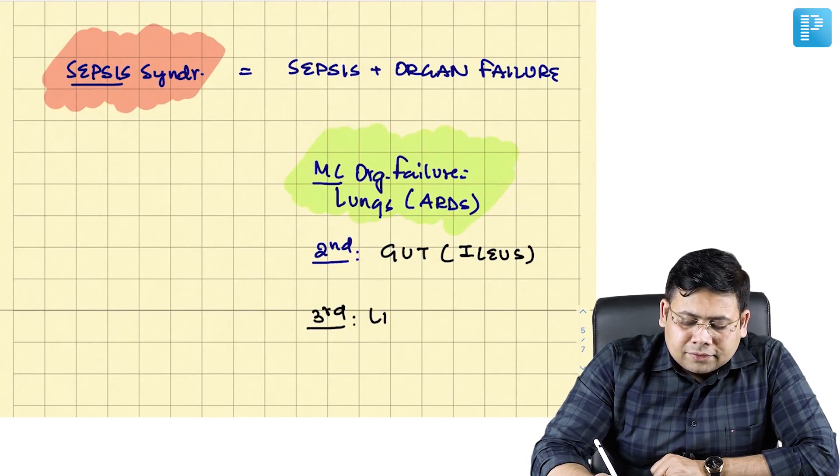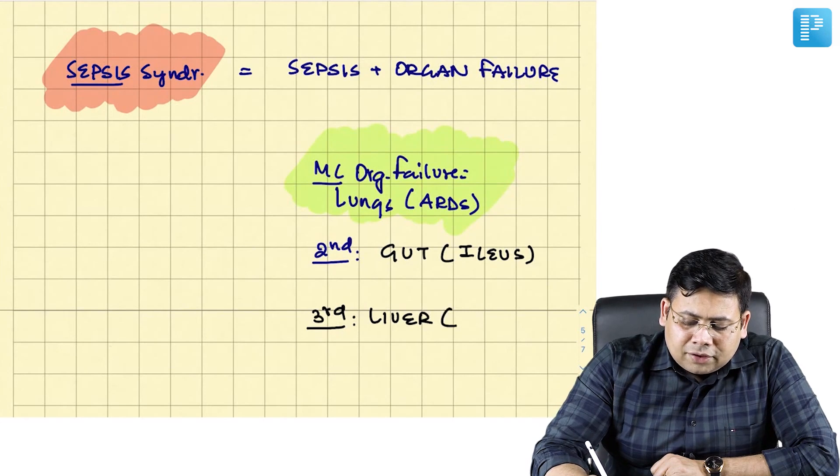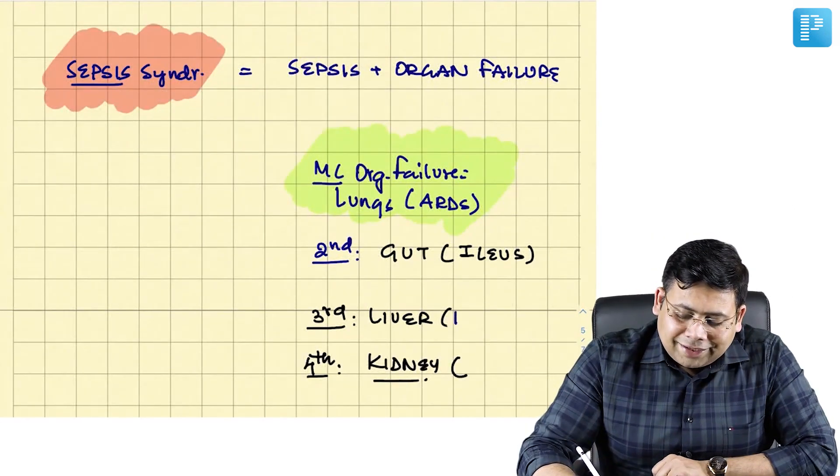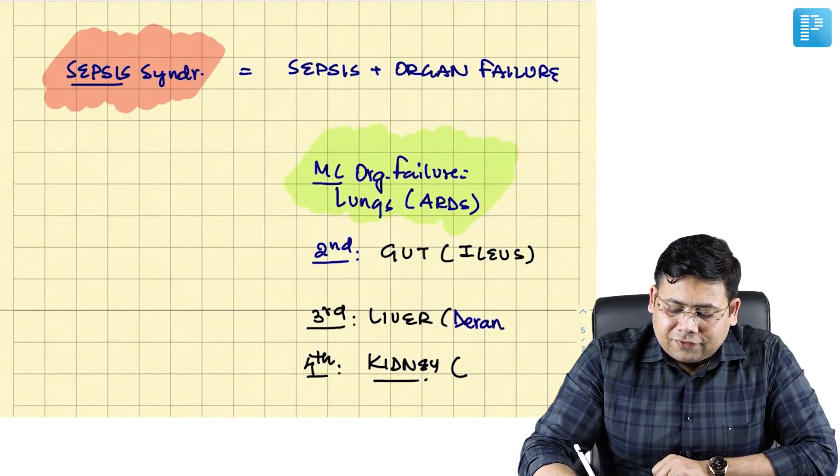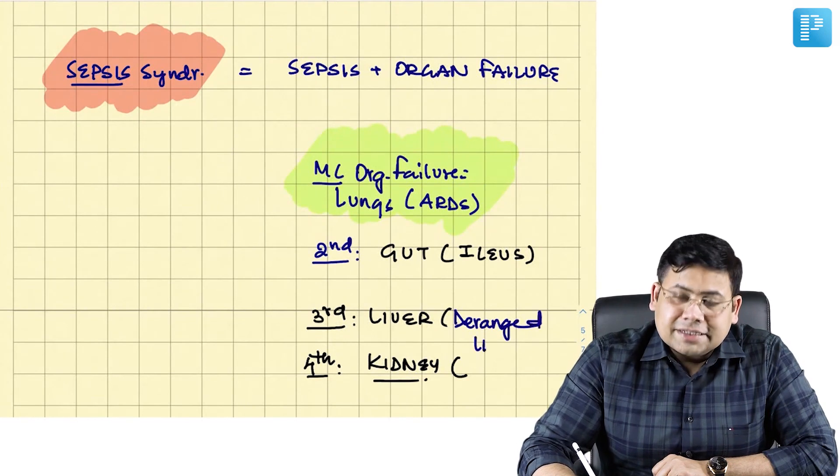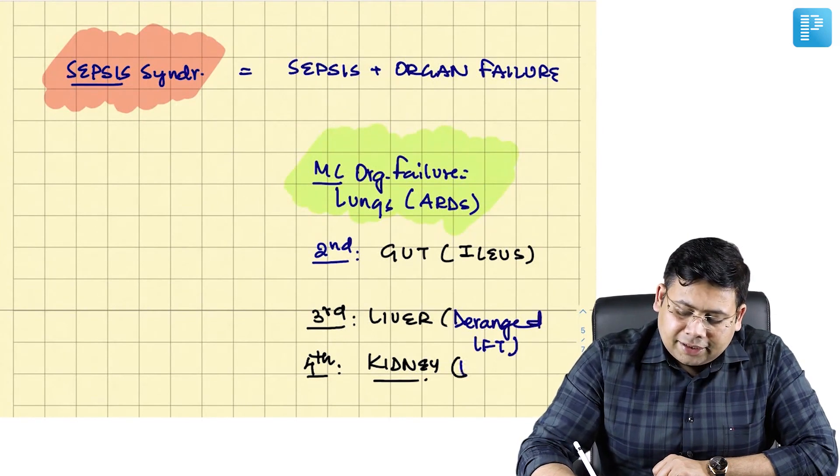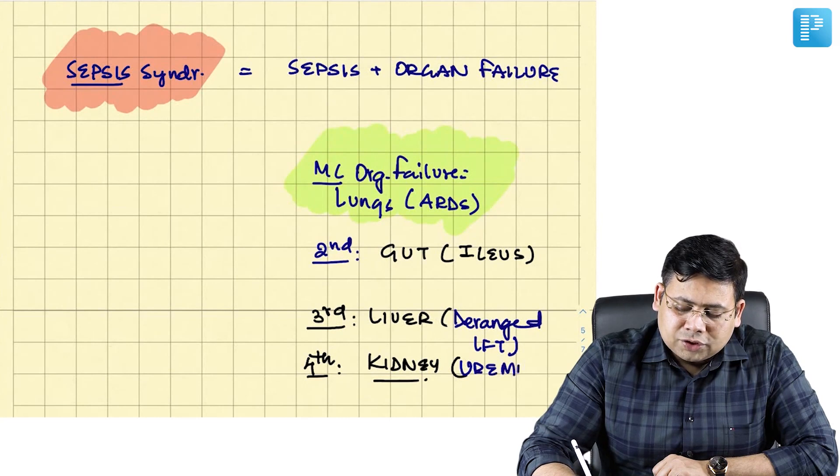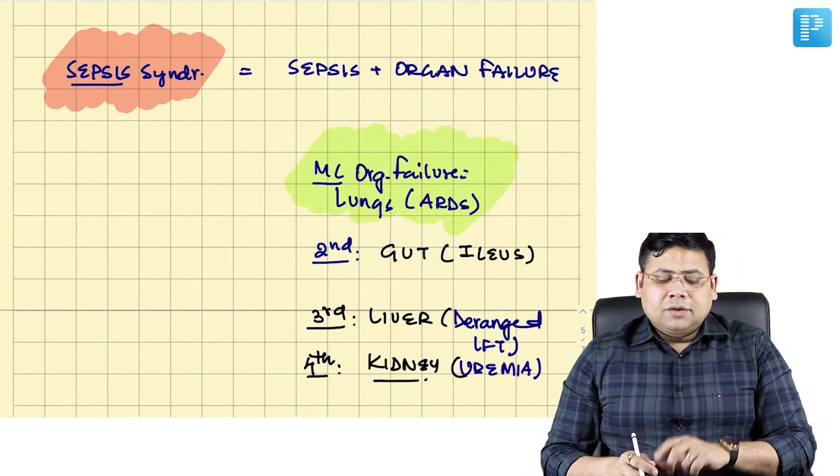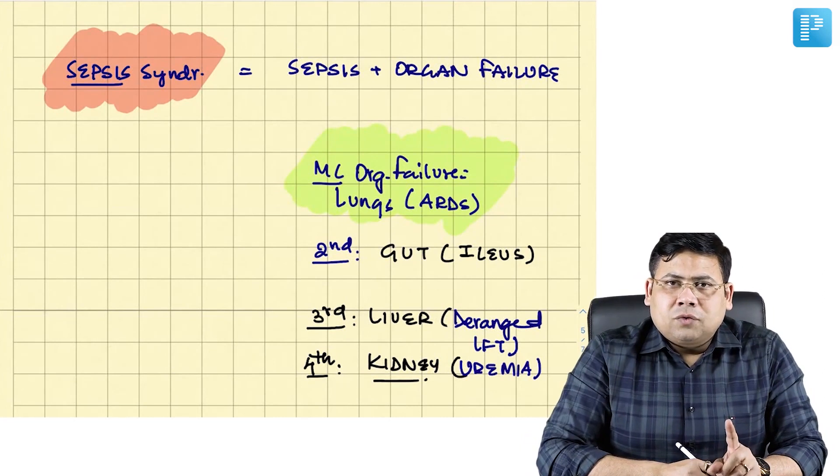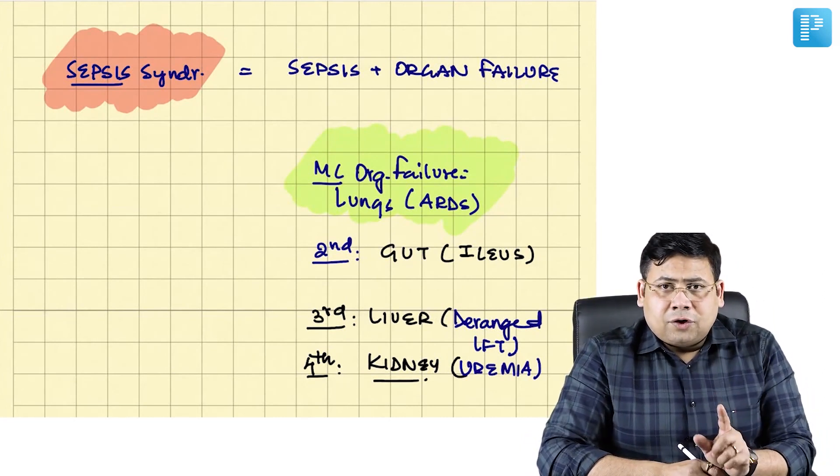The third most common after this is liver. What do you see in liver? In liver you see deranged LFT, deranged liver function test. And in kidney you see uremia. So sepsis plus organ failure, this is known as sepsis syndrome.